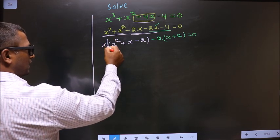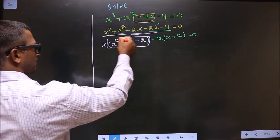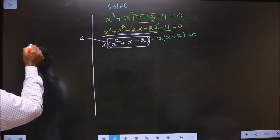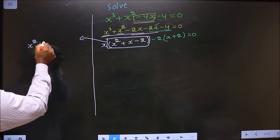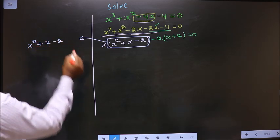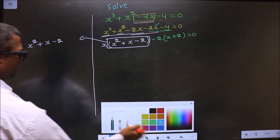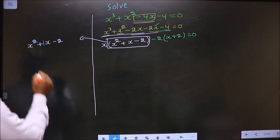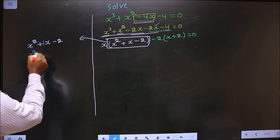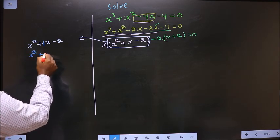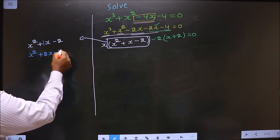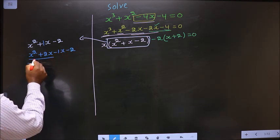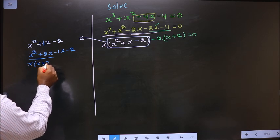I got a quadratic here, so now I will factorize this. That is x square plus x minus 2. To factorize this, I should change the x term. In place of 1x, I will write plus 2x minus 1x minus 2. From these 2, take out x common — you get x plus 2.